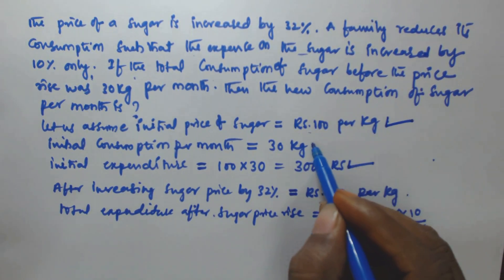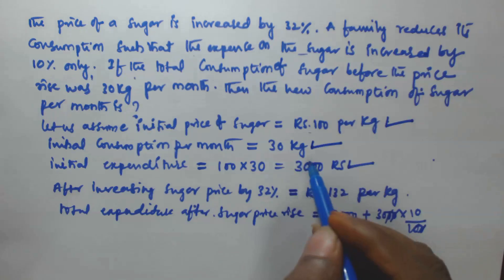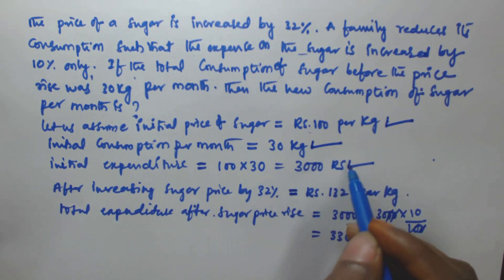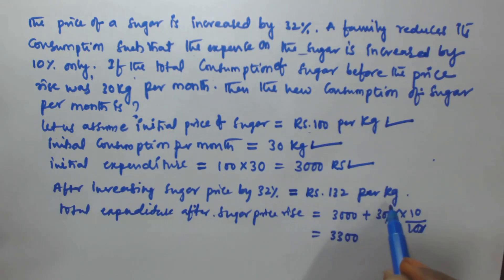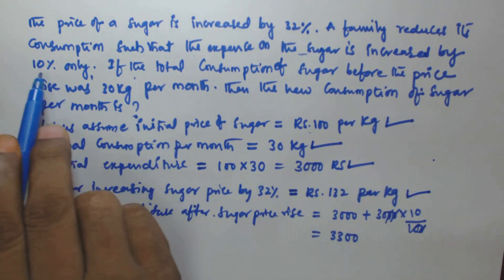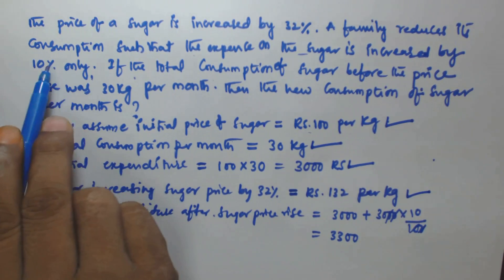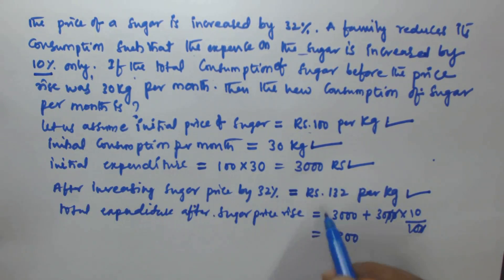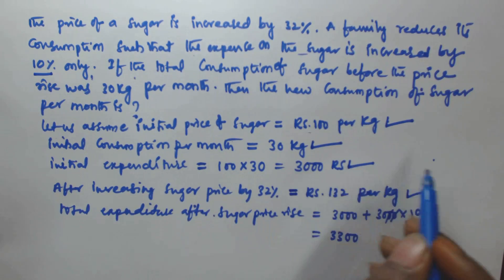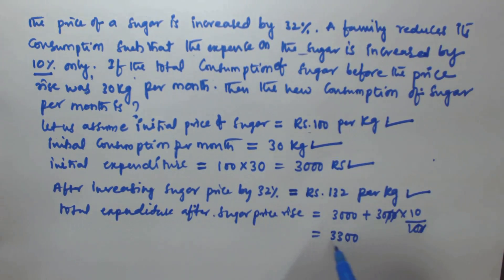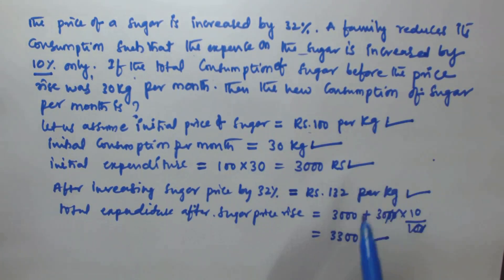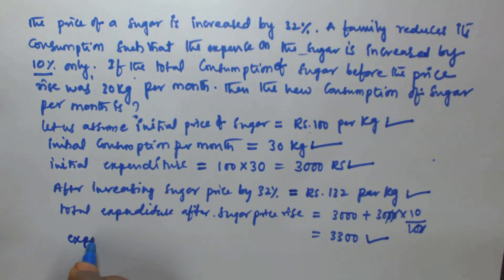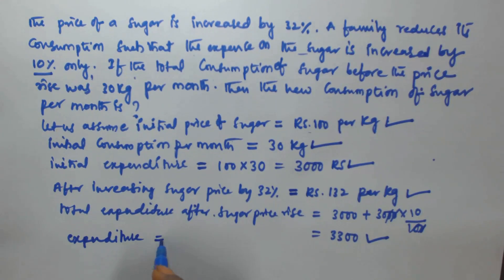So the initial price of the sugar is 100 rupees per kg, the initial consumption is 30 kg, and the total expense is 100 into 30 which is 3000. The sugar price is increased by 32 percentage so it becomes 132 rupees per kg. The total expenditure is increased by 10 percentage, so 3000 plus 10% of 3000 gives 3300. Now we have to find the new consumption. We know that expenditure is equal to consumption multiplied by price per kg.